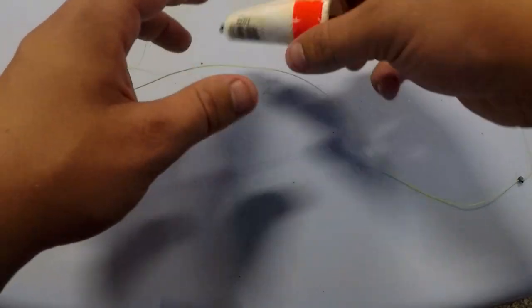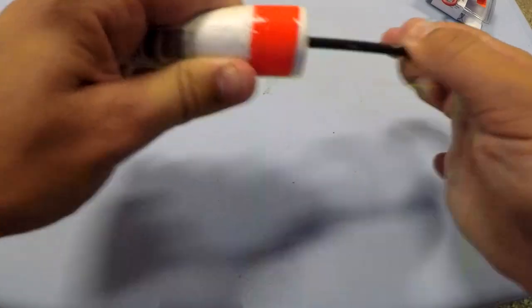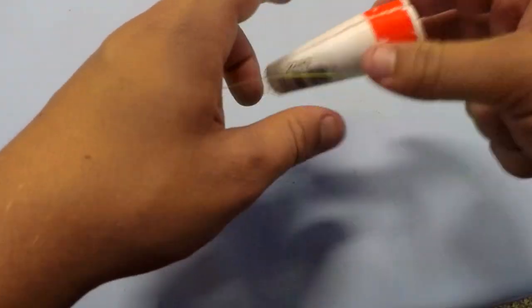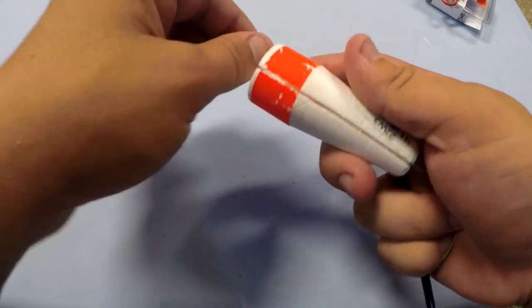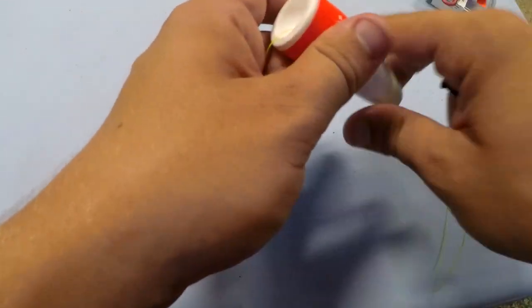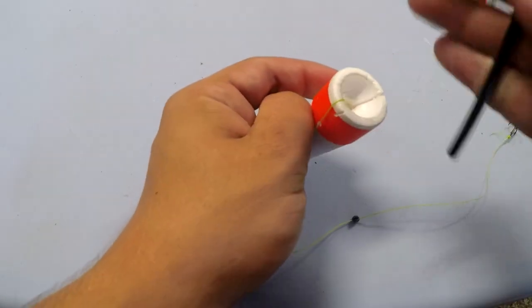So all you got to do is take your pen out, put on your cork, slide it in, and hold the fishing line to the back.